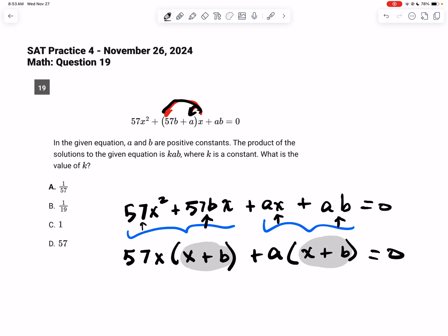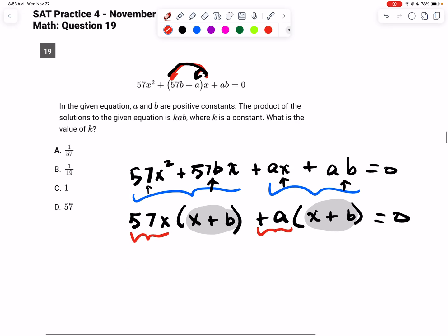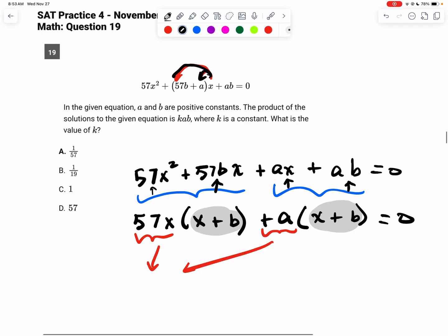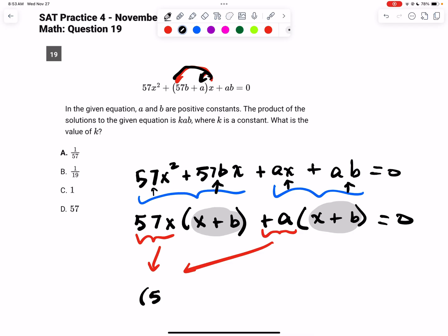So that means that this here is being multiplied by x plus b, and so is this. So I can take those and I can put them together in one set of parentheses to get 57x plus a, and in my other parentheses, I get x plus b, and that's all equal to 0.